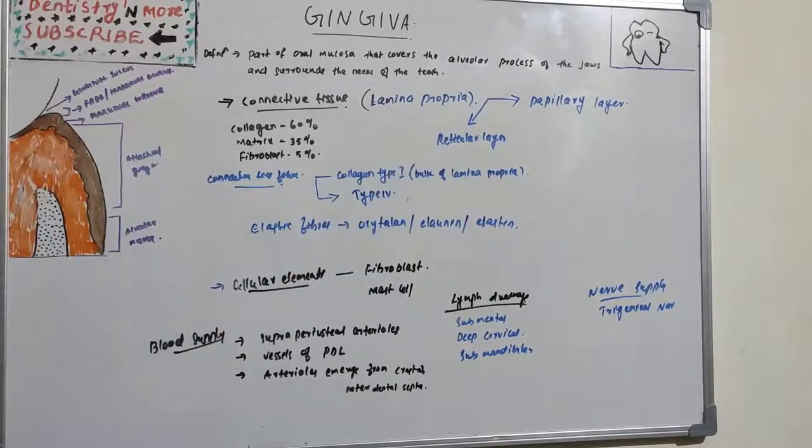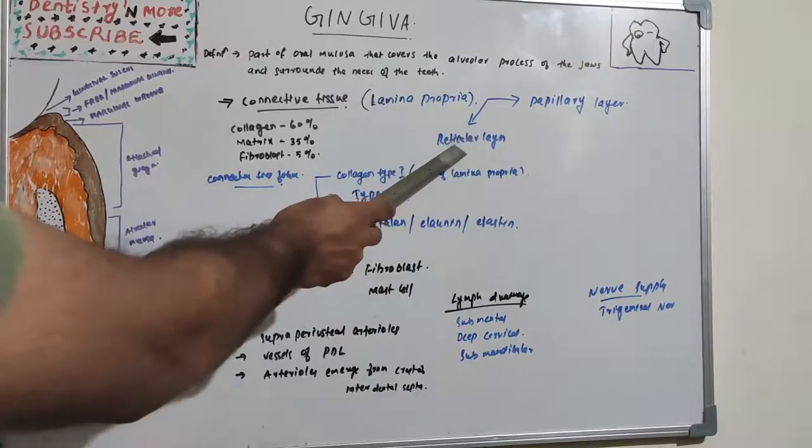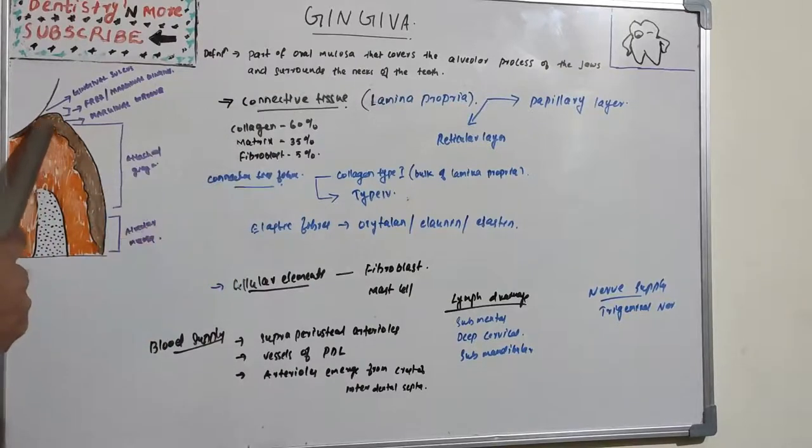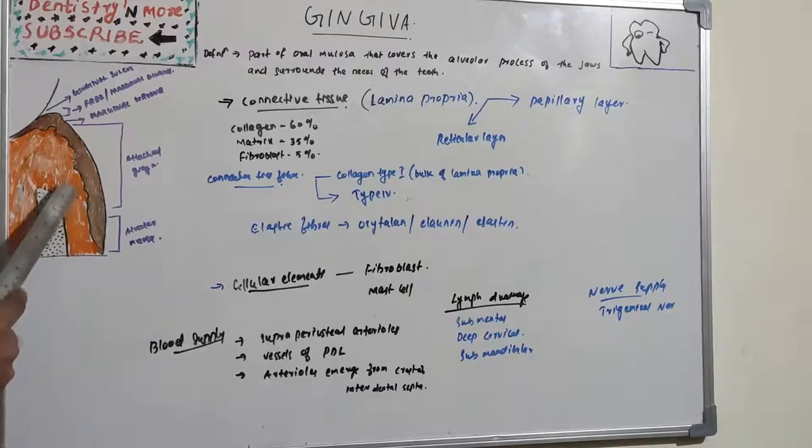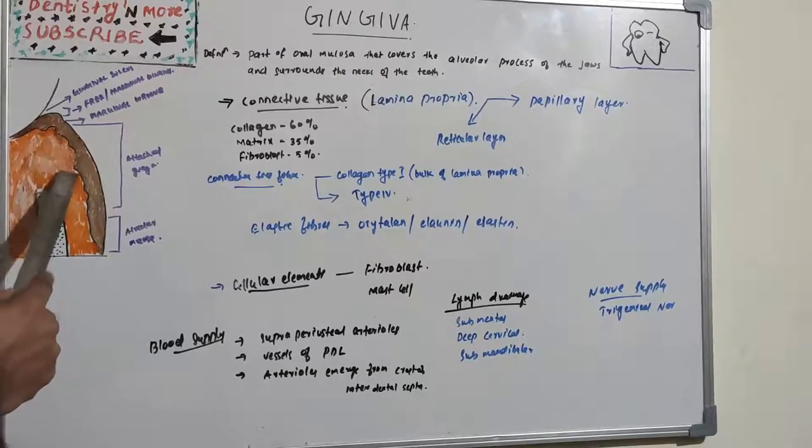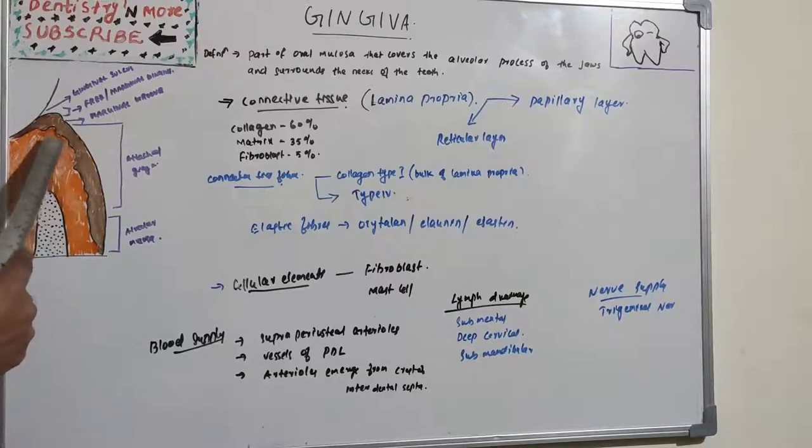This includes connection with the alveolar bone, contiguous with alveolar bone, and papillary layer is here. So this is the connective tissue papillary layer which is with projections between the epithelial rete pegs. You can see the projections. This is a papillary layer and this part is reticular layer.